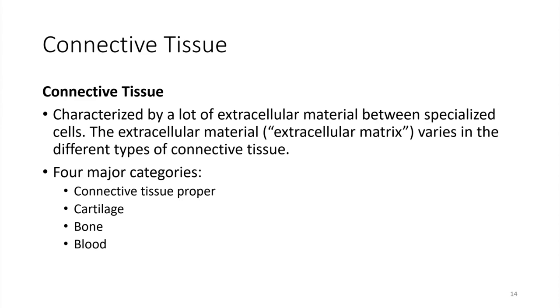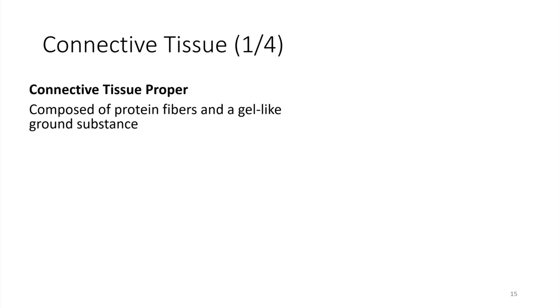We'll take a look at each of these. Let's start with connective tissue proper. Connective tissue proper is composed of a gel-like ground substance that has protein fibers embedded in it. And then on top of that, there are cells living in this matrix.